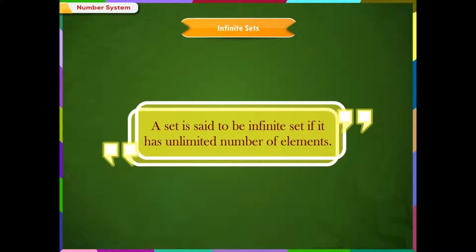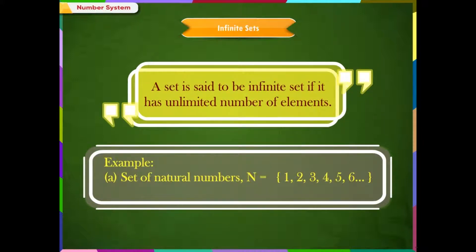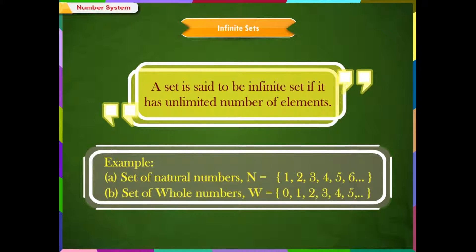Infinite sets: a set is said to be an infinite set if it has an unlimited number of elements. For example, set of natural numbers N is equal to {1, 2, 3, 4, 5, 6, ...} and set of whole numbers W is equal to {0, 1, 2, 3, 4, 5, ...}. In both examples, the elements are infinite — the number of elements is not fixed. So, set N and set W are infinite sets.